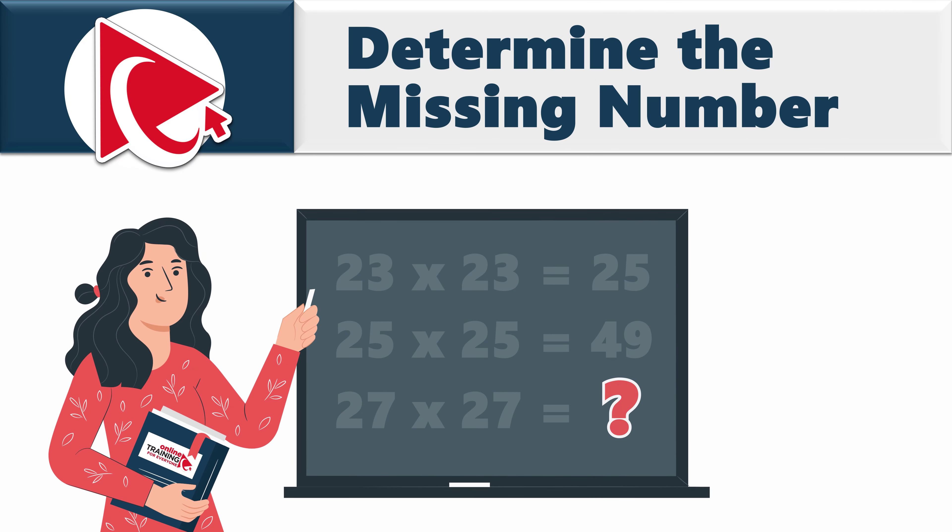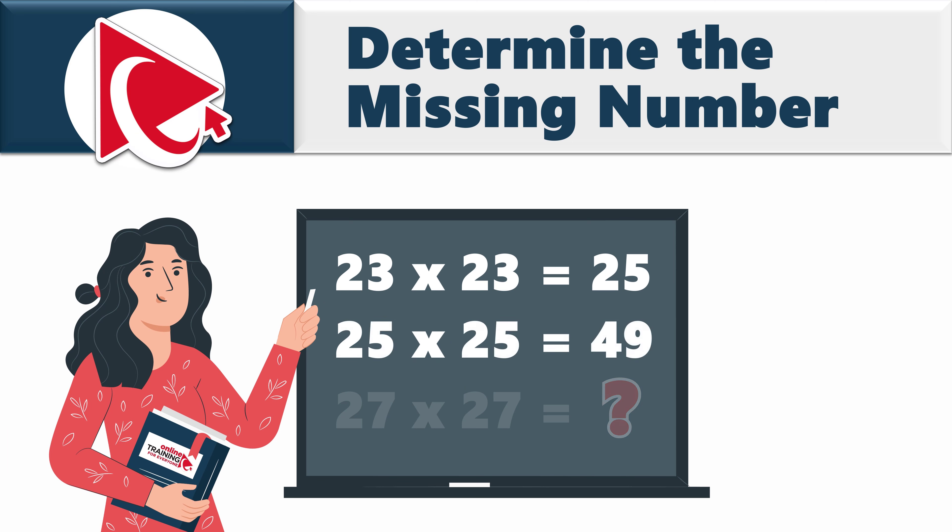In fact, you're presented with three of those expressions. The first one is 23 multiplied by 23 equals 25. The second one is 25 multiplied by 25 equals 49. And the third one is where you need to find the missing number. The expression is 27 by 27.